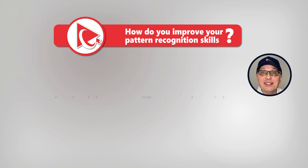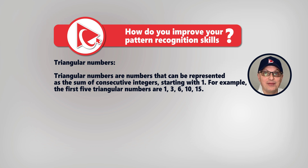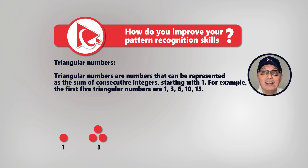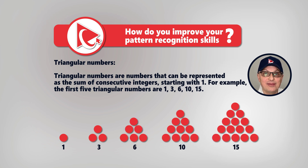Let's start with triangular numbers. Triangular numbers are the numbers that can be represented as a sum of consecutive integers, starting with 1. For example, the first five triangular numbers would be 1, 3, 6, 10, and 15.